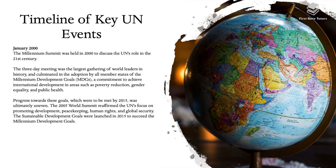The Millennium Summit was held in 2000 to discuss the UN's role in the 21st century. The three-day meeting was the largest gathering of world leaders in history and culminated in the adoption by all member states of the Millennium Development Goals — a commitment to achieve international development in areas such as poverty reduction, gender equality, and public health. Progress towards these goals, which were to be met by 2015, was ultimately uneven. The 2005 World Summit reaffirmed the UN's focus on development, peacekeeping, human rights, and global security. The Sustainable Development Goals were launched in 2015 to succeed the Millennium Development Goals.